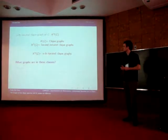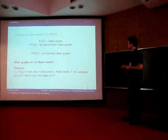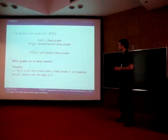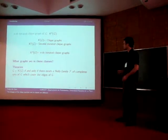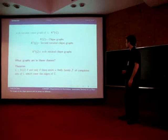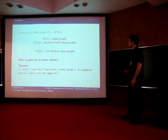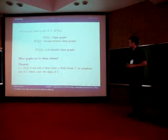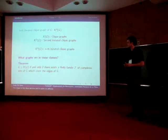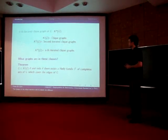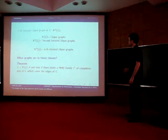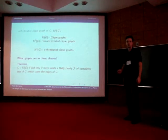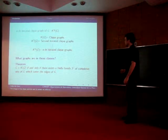Let us start with clique graphs. We have the classic theorem by Roberts and Spencer which says that graph G is a clique graph if and only if there exists a Helly family of complete sets of G which cover the edges of G. A family is Helly when three or more intersecting sets of the family have a common element, and covering the edges means that for any edge there is a complete of the family having that edge.